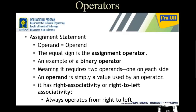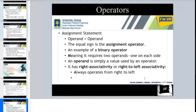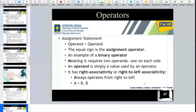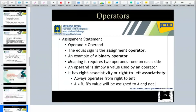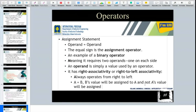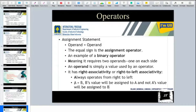A binary operator means one operand on each side, and an operand is simply a value used by the operator. It has right associativity, meaning evaluation goes from right to left. So a = b means b's value will be assigned to a, not a's value assigned to b. Always right associativity, from right to left.